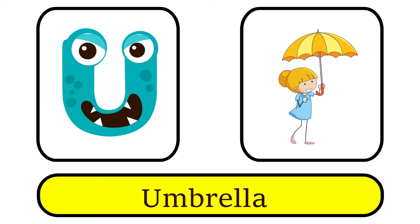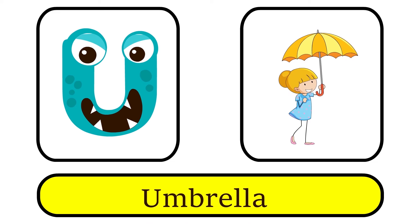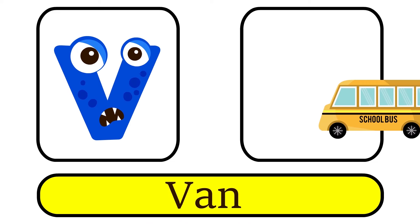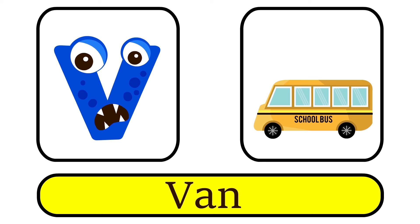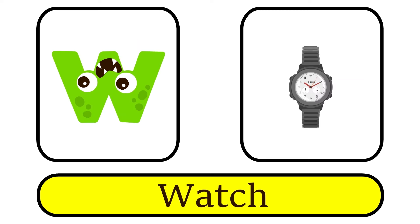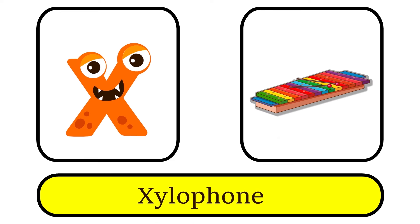U is for Umbrella. A, A. V is for Van. V, V. W is for Watch. Wa, Wa.